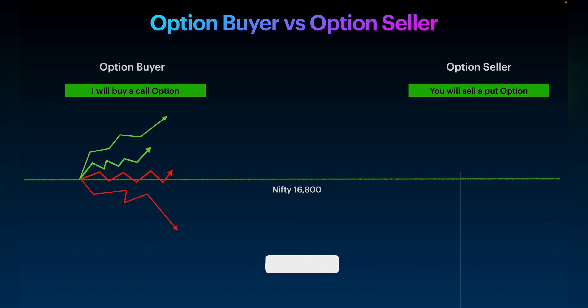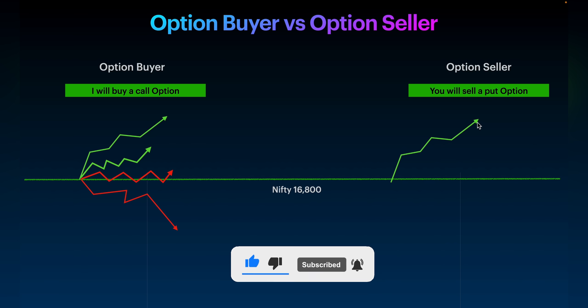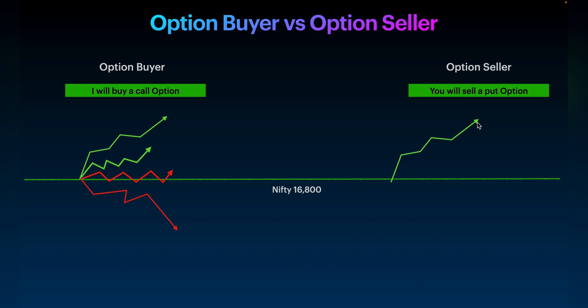For an option seller, the situation is different. If your view is correct and you sold a put option being bullish, and the market made a quick momentum upward, you make the entire profit. For an option seller the profit is fixed — let's say you sold at 130 rupees premium, you will get the entire 130 rupees if the market goes according to plan. Now instead of quick momentum, if Nifty makes a slower upward momentum, still you will make that entire 130 rupees. If the market makes a consolidation and stays in a range for a longer duration, still you will make your entire 130 rupees. The longer the stock stays within a range, it is good for the option seller because time is a friend of option seller.